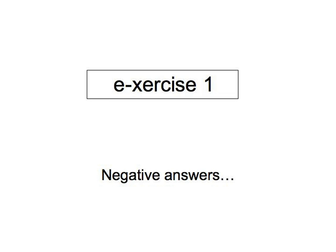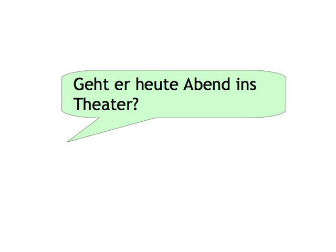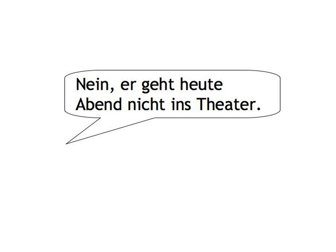E-Exercise 1. In the first E-Exercise, you simply answer our questions in the negative by putting nicht in the correct position. Look up the words that squeeze in between the verb and the nicht. So you respond to the question, 'Geht er heute Abend ins Theater?' with the answer, 'Nein, er geht heute Abend nicht ins Theater.' Let's start.